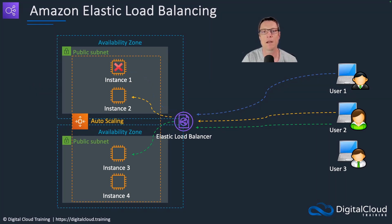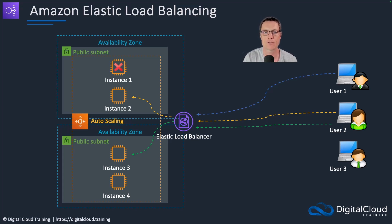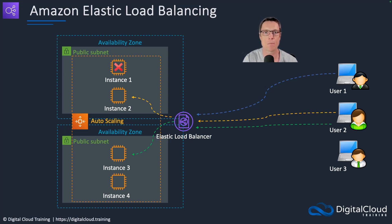Elastic load balancing will perform health checks. The target group — that's the collection of targets where you define some characteristics and configuration settings — is going to perform health checks on those instances. For example, if they are web servers, it might connect on port 80, the HTTP port, and check a certain URL path to see if it gets a positive response, say a 200 return code.